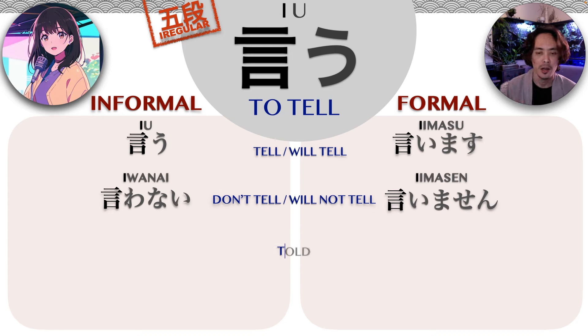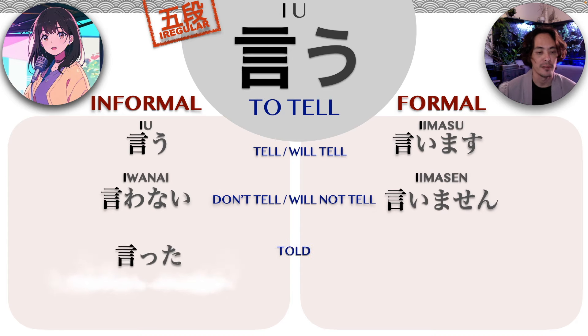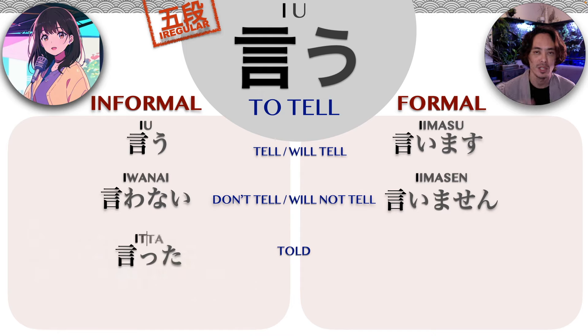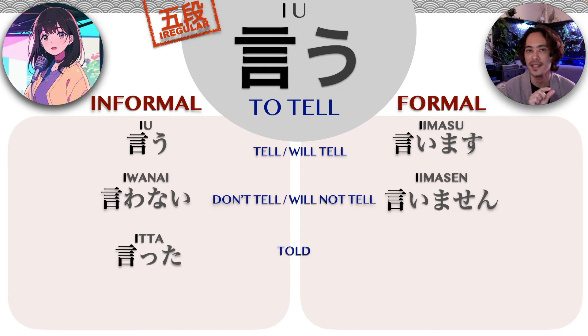The past tense in the informal way is itta — there's a small tsu, right? So it's itta. There's a little pause in between the i sound and the ta sound: itta.